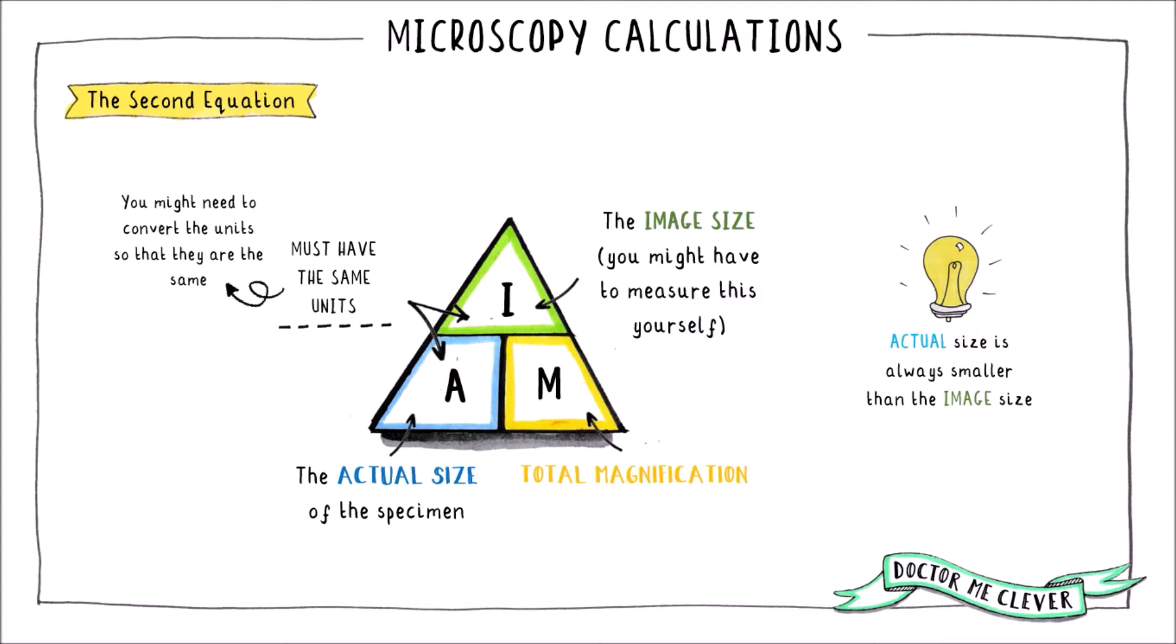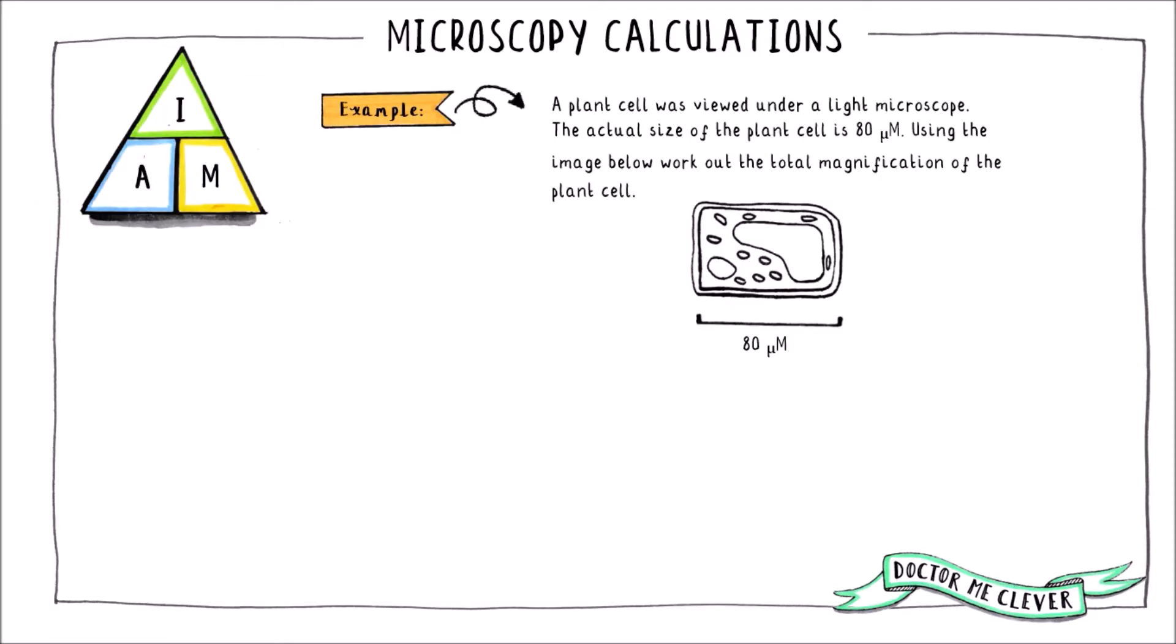Let's look at an example of how to use this equation. A plant cell was viewed down a light microscope. The actual size of the plant cell is 80 micrometres but that's all the information we've been given in the text. We know that to work out the total magnification we also need the image size. So we'll need to measure this ourselves.